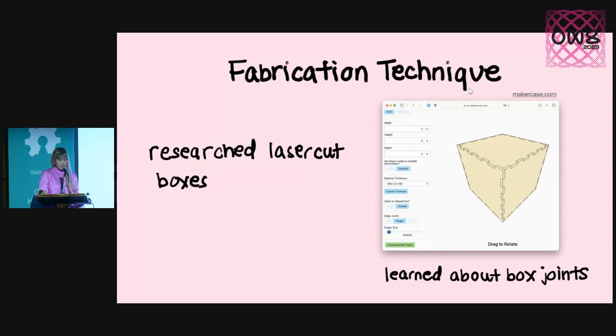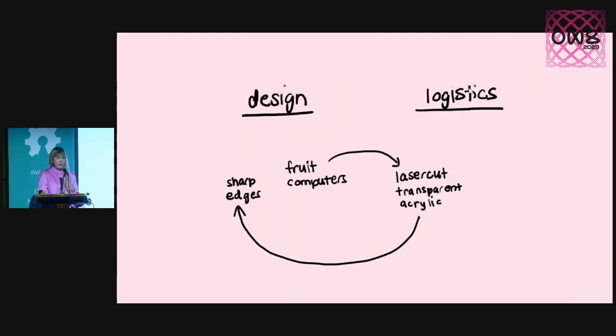So I started researching laser cut boxes. And there are a lot of options that you can play with on makercase.com. And I learned about box joints. And this was the first example of how the design had influenced the logistics of the design, and then influenced the design again. I decided to do fruit computers with vibrant acrylic colors. Acrylic meant that I decided to laser cut, and laser cutting meant that I was probably going to have mostly sharp edges in my design.